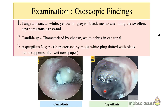However, you may not get the typical finding in some cases, and it may not be easily recognizable. To identify the type of pathogen, after debridement of the debris, the specimen must be sent for microbiological examination, microscopic examination, and culture sensitivity examination.